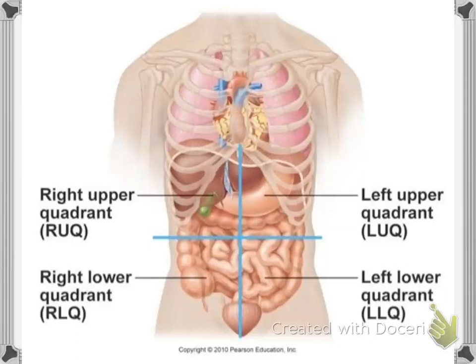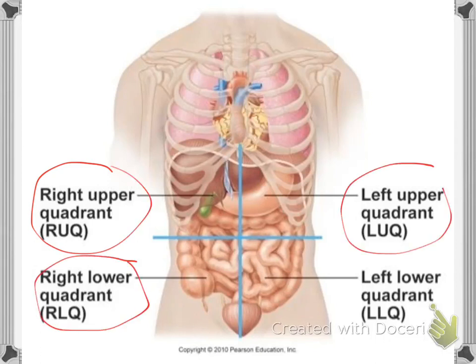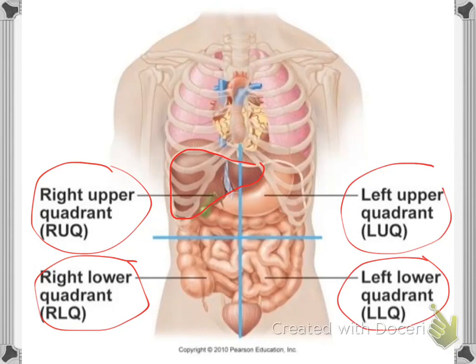The abdomen is divided into four quadrants: the right upper quadrant, right lower quadrant, left upper quadrant, and left lower quadrant. The liver is situated in the right upper quadrant. To keep it in place — without moving right, left, up, or down — there are some ropes or ligaments that attach the liver to the diaphragm and to the abdominal wall.